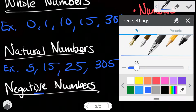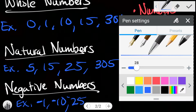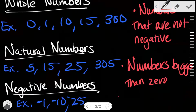The next category is negative numbers. Negative numbers are numbers less than 0, so negative 1, negative 10, negative 25 — negative numbers are numbers less than 0.